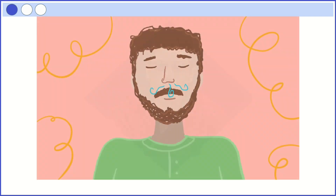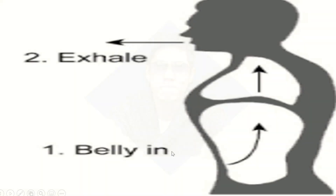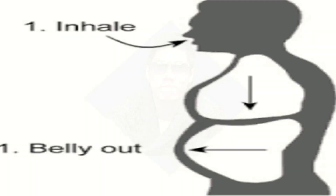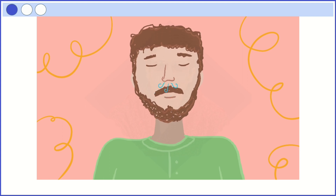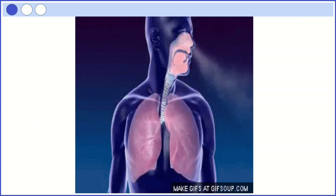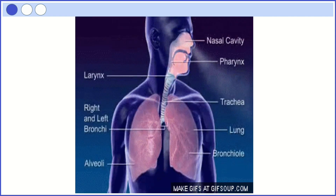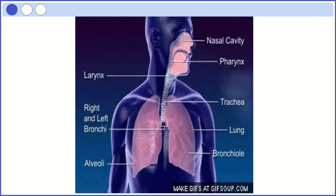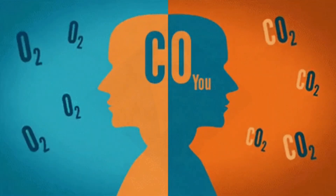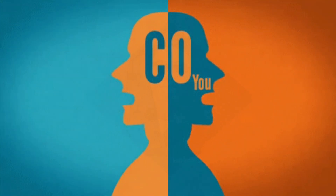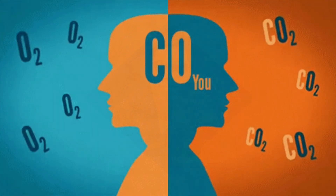Breathe in and out. Notice your chest and belly moving, and feel the soft air passing from the nose. The human respiratory system is composed of different organs responsible for gas exchange. Oxygen enters the body as you breathe in for the cells to live and function properly, and carbon dioxide is removed as you breathe out.